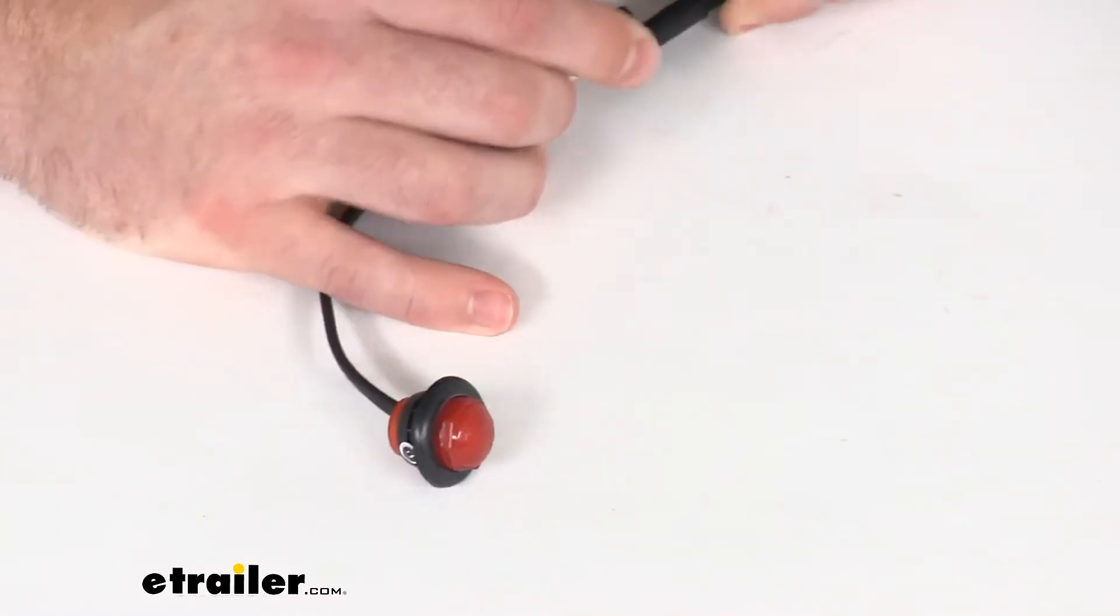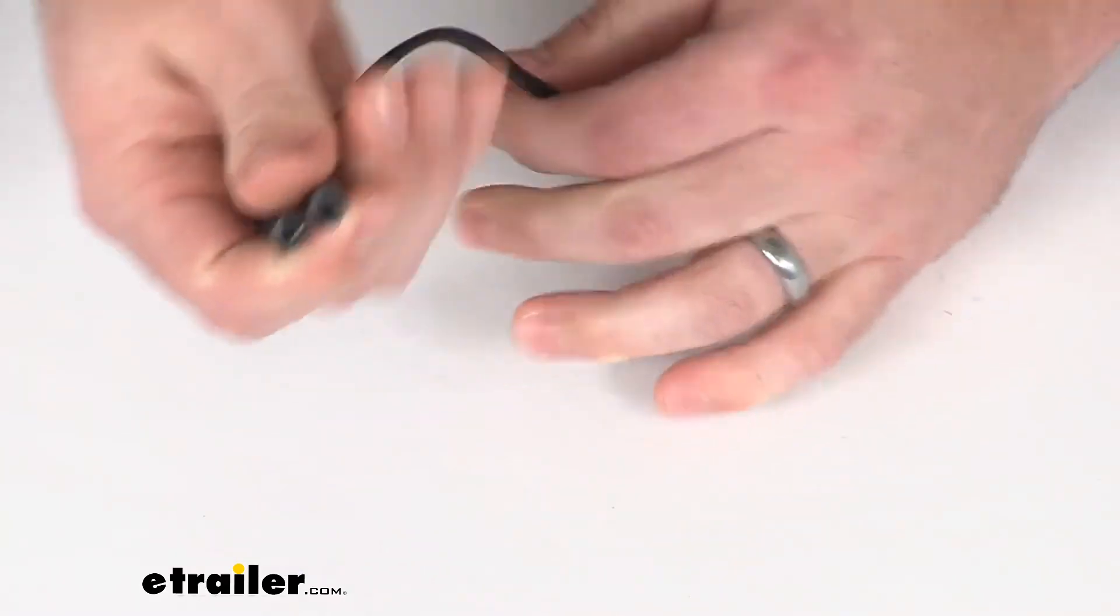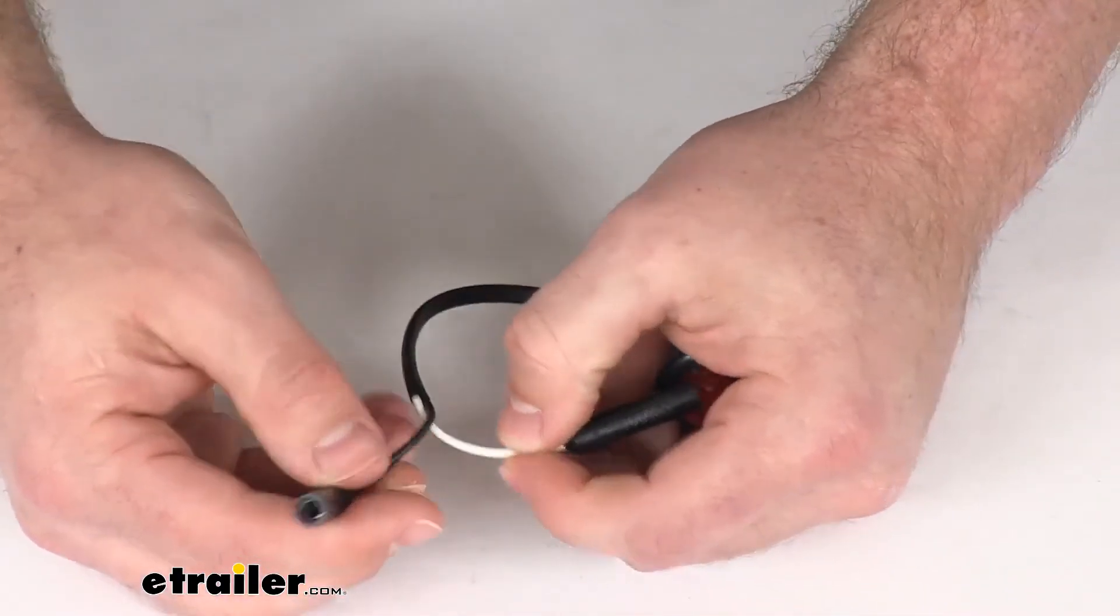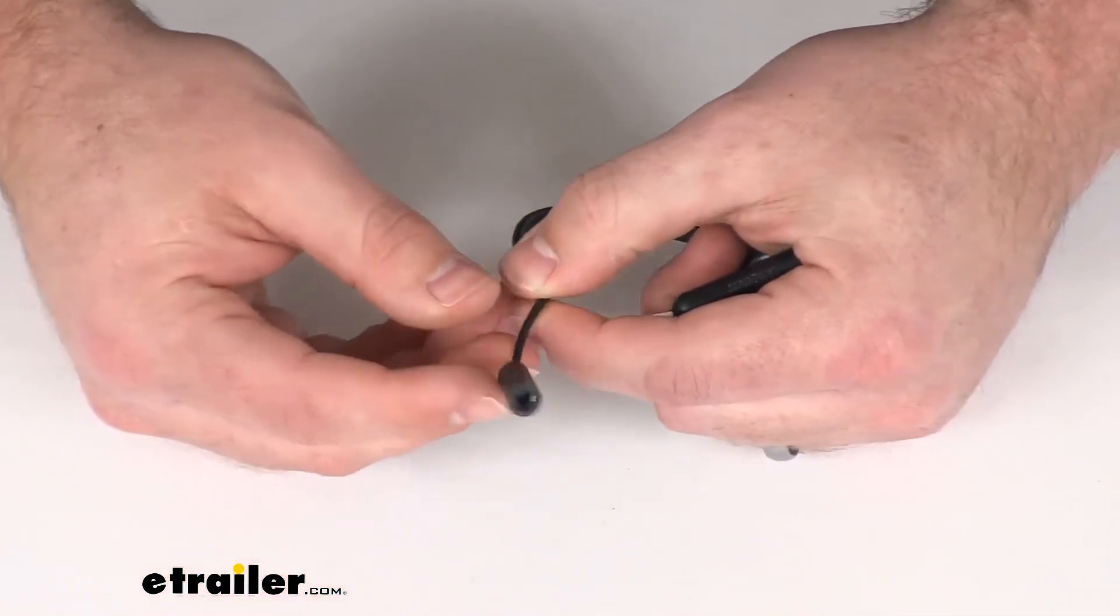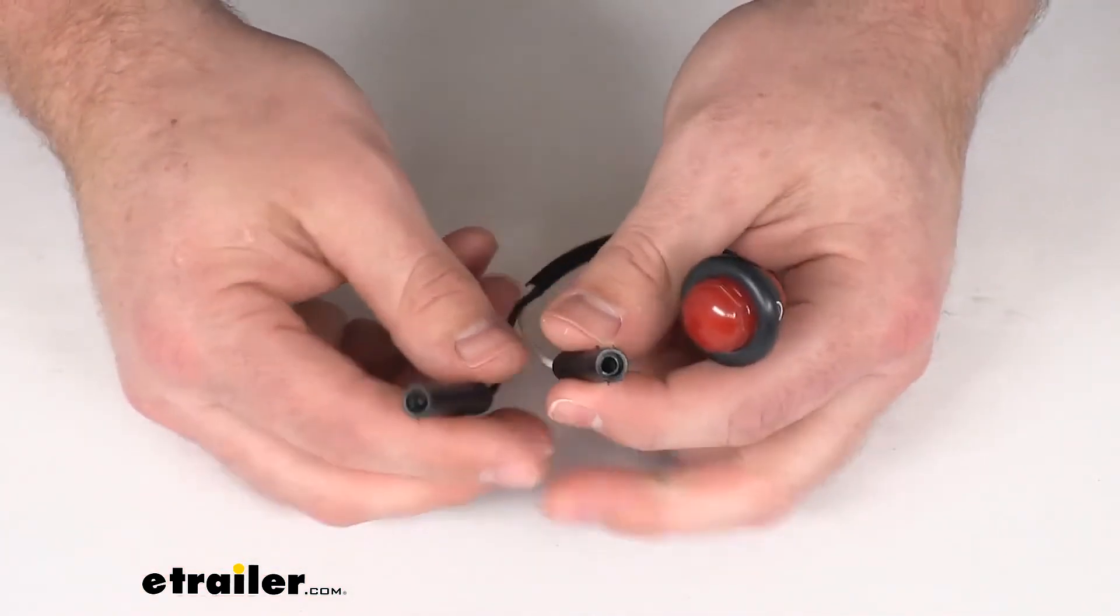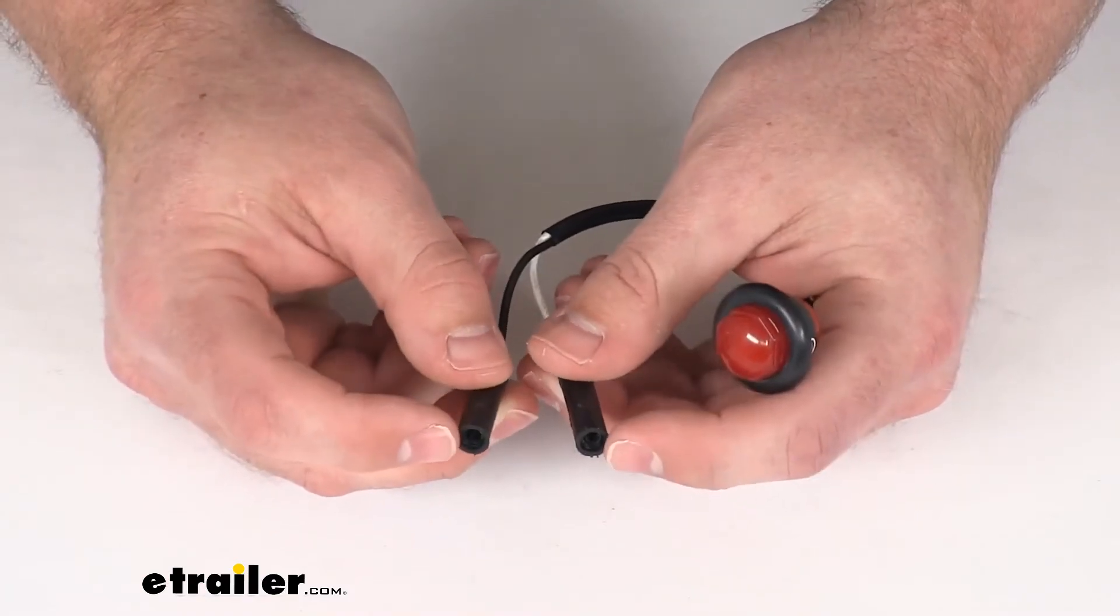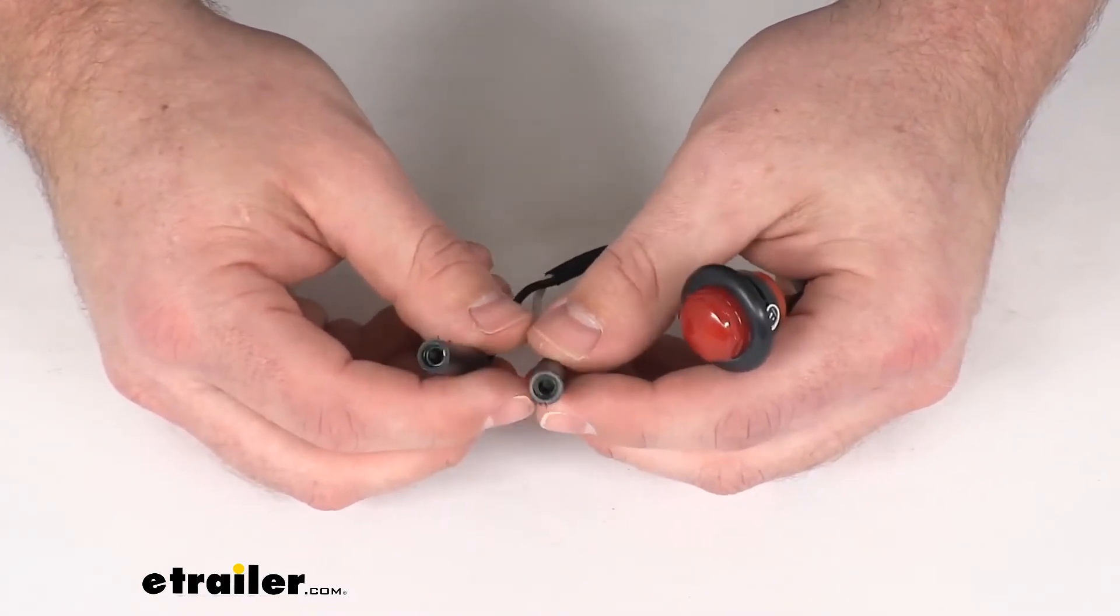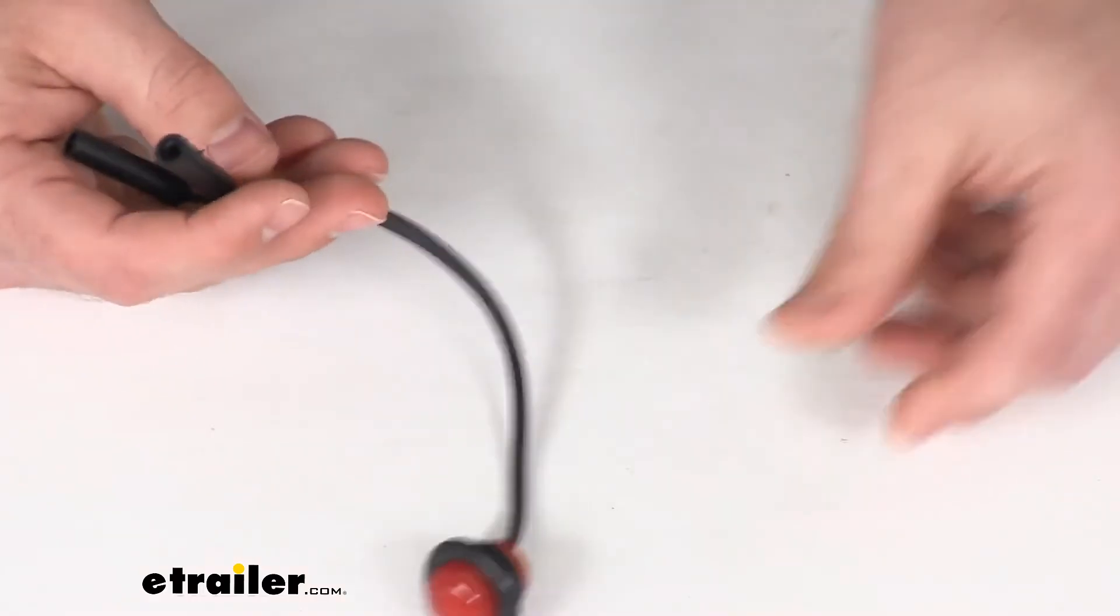This does have a two wire pigtail to it, so you've got your white ground and your black power supply. This does have the 0.156 female bullet connectors to get this plugged in, so it'll plug right in to your two male bullet connectors to get light going to your trailer.